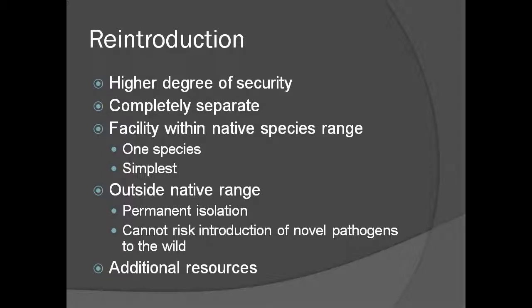Most of this presentation has focused on basic biosecurity precautions for any amphibian collection. If animals are intended to be reintroduced to the wild, they should be maintained at a higher degree of security. In general, reintroduction programs should keep candidates completely separate from species from other geographic areas. The simplest way is to locate the facility in the amphibian's native geographic area and house only one species in any one space. If housing the species outside of its normal range, care must be taken to permanently isolate these animals from other amphibians.